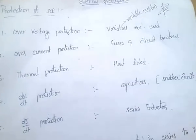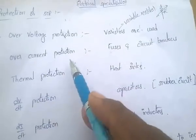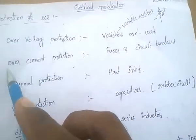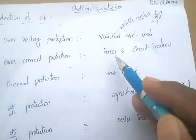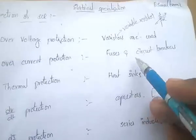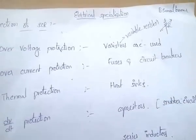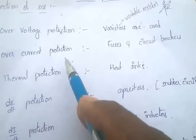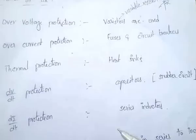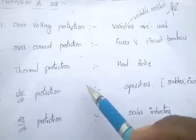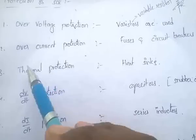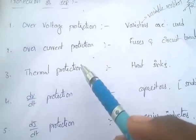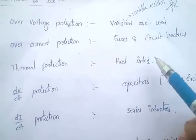Overcurrent protection: to limit the current or protect from overcurrent, fuses and circuit breakers are used to protect the device from overcurrent. Thermal protection: for heat protection, heat sinks are used.